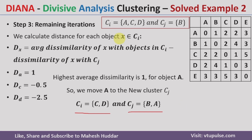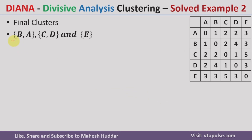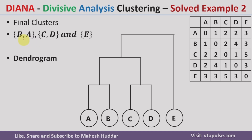So we got three clusters: one cluster contains C and D, the second contains B and A, and the third contains E, which was finalized in the previous iteration. Now we try to divide these clusters further. If we divide the CD cluster, since there are only two data points, we get one cluster as C and another as D. If we divide BA, we get one cluster containing B and another containing A. So totally we get five clusters. We finalize here with first cluster BA, second cluster CD, and third cluster E. Drawing the dendrogram: we can merge BA to get one cluster, merge CD to get another, then merge BA and CD together, and finally merge A, B, C, D with E to get the final cluster.